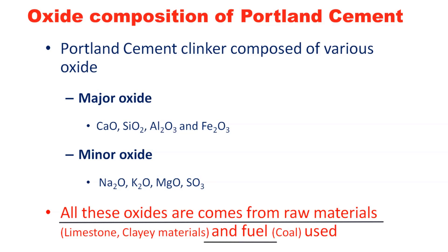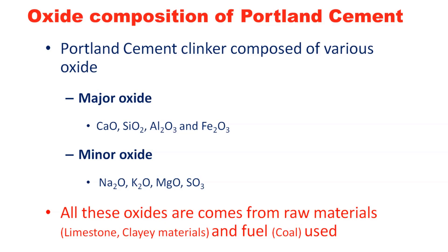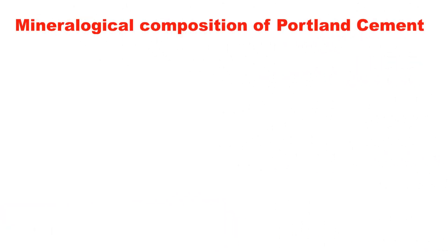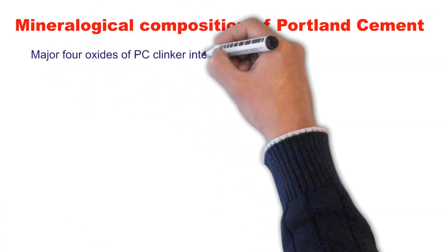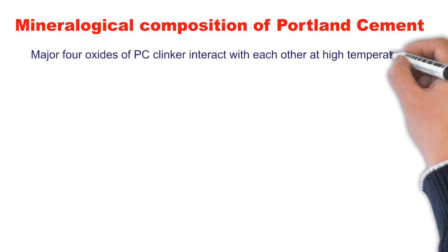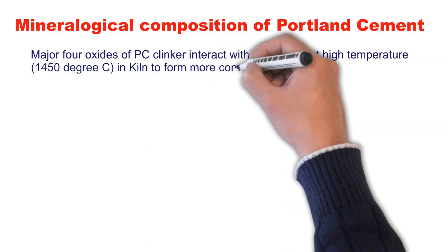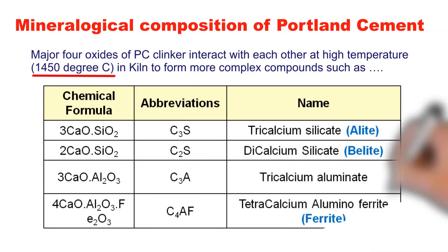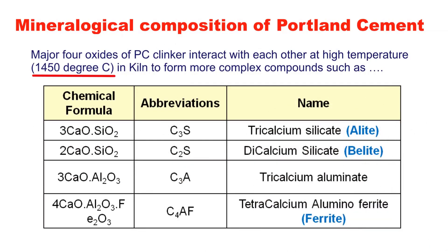All these oxides essentially come from the raw materials and fuel used for manufacturing the clinker. The four major oxides — calcium oxide, silicon oxide, aluminum oxide, and iron oxide — interact with each other at high temperature, approximately 1450°C in the kiln, and form four major components: tricalcium silicate, dicalcium silicate, tricalcium aluminate, and tetracalcium aluminoferrite.